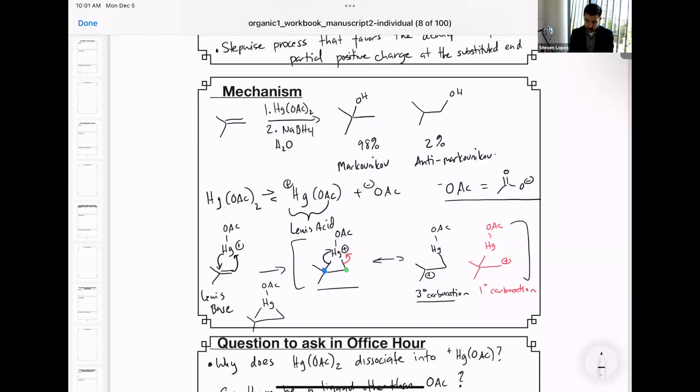And in this last step, water will attack the more substituted position. And the sodium borohydride will help to substitute and remove that mercury-containing compound.